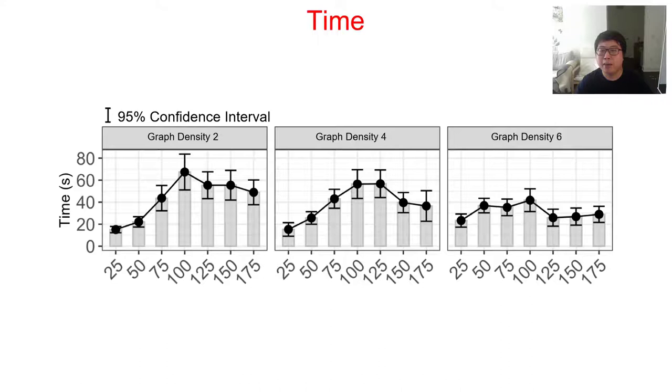We also recorded the time our participants spent on each trial. Here, we use error bars to represent the 95% confidence interval. Comparing to the previous two measures, this one looks a bit surprising. In the first stage, with the increasing number of nodes, participants spent more time on the trials. However, at a certain level of difficulty, the time decreased. Our explanation of this is that when the complexity of the trial increased to a certain level, people started to give up after some initial attempts, so the overall time dropped.